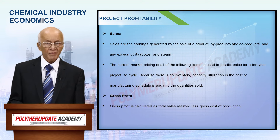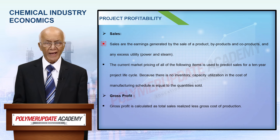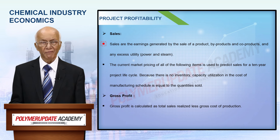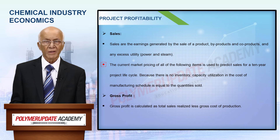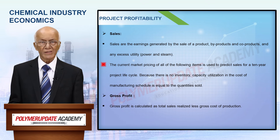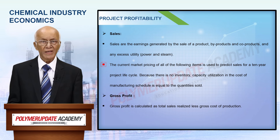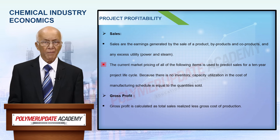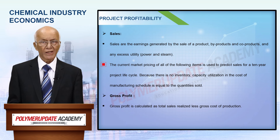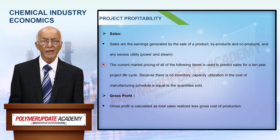Sales are the income resulting from selling products, by-products, co-products, and any excess utility, i.e. power and steam, if any. The prevailing market price of all the above products is considered for the estimate of sales for the project lifespan of 10 years. There being zero inventory, capacity utilization and the cost of production schedule would be identical to the quantity sold.